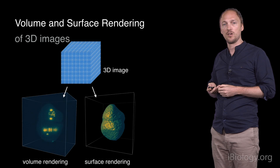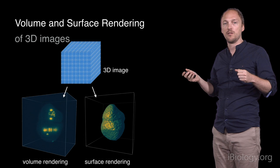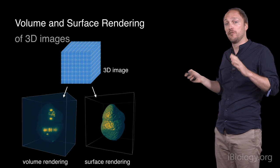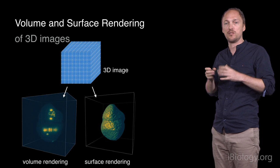Creating 2D images from multi-dimensional data is often called rendering. There are mainly two classical approaches for rendering 3D data, volume rendering and surface rendering, as you can see here. In the following, I will focus on volume rendering as it is oftentimes the most appropriate for light microscopy data.